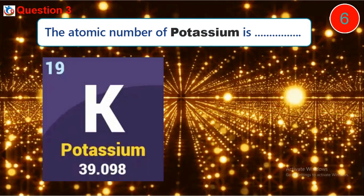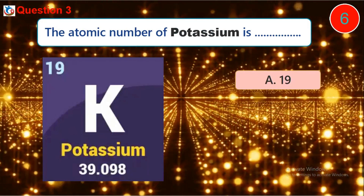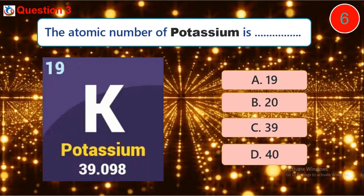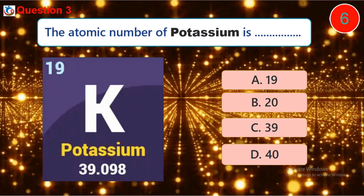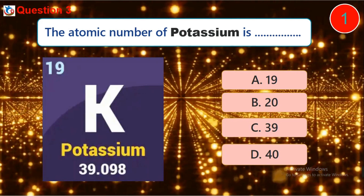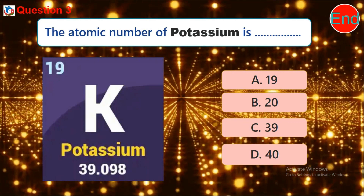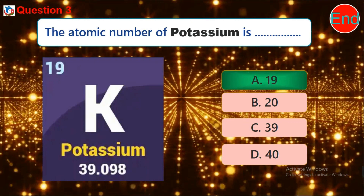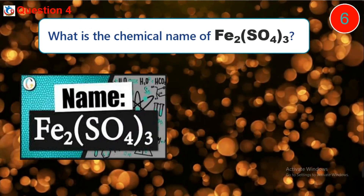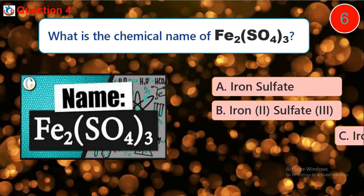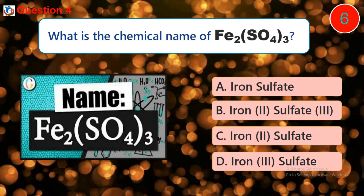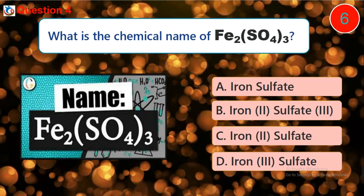Question 3: The atomic number of potassium is dash. A) 19, B) 20, C) 39, D) 40. Question 4: What is the chemical name of this symbol? A) Iron sulfate, B) Iron 2 sulfate 3, C) Iron 2 sulfate, D) Iron 3 sulfate.